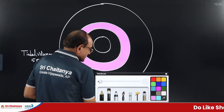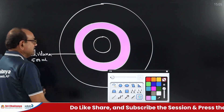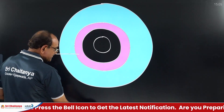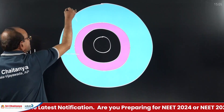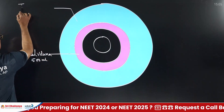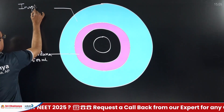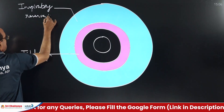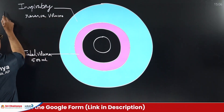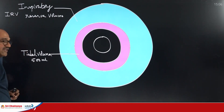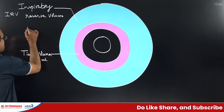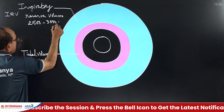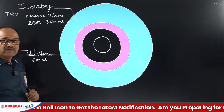A healthy person can also take an additional volume of air into the lungs. This additional volume of air taken into the lungs through forceful inspiration is called inspiratory reserve volume (IRV). The inspiratory reserve volume is approximately 2500 ml to 3000 ml.